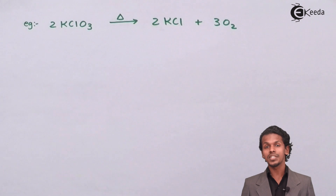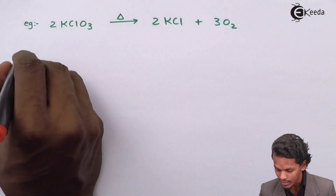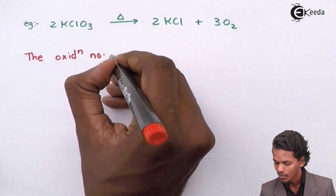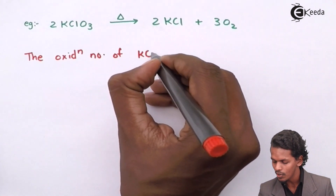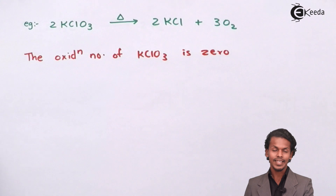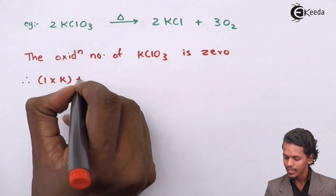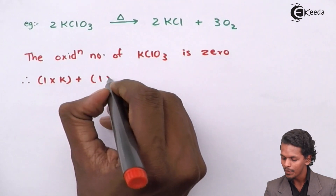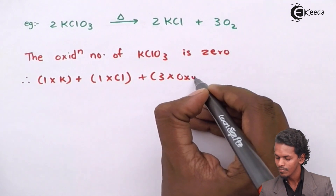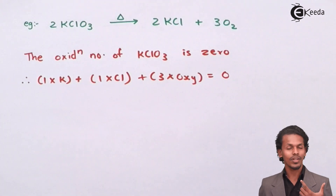Let us find the oxidation number of chlorine in KClO₃. The overall oxidation number of KClO₃ is zero because there is no charge on the molecule. So I can write: 1×(K) + 1×(Cl) + 3×(O) = 0, meaning the overall oxidation number of KClO₃ is zero.